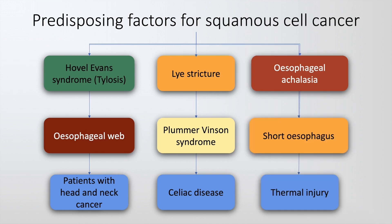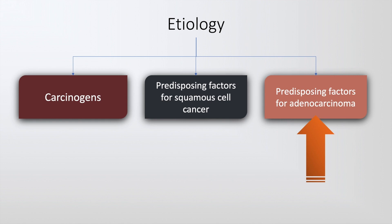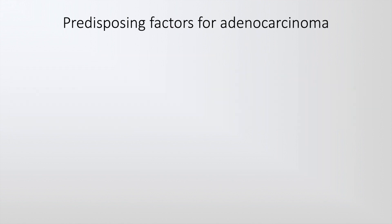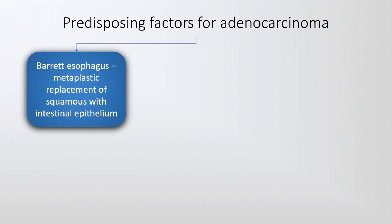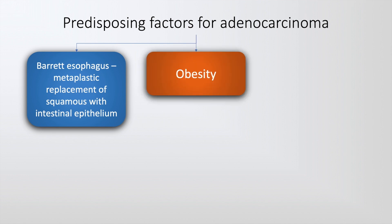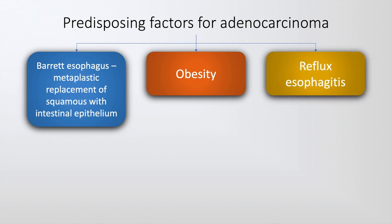Additional predisposing factors for squamous cell cancer include short esophagus and thermal injury. The factors predisposing to adenocarcinoma include Barrett's esophagus, which is defined as the metaplastic replacement of squamous with intestinal epithelium, obesity, and reflux esophagitis.